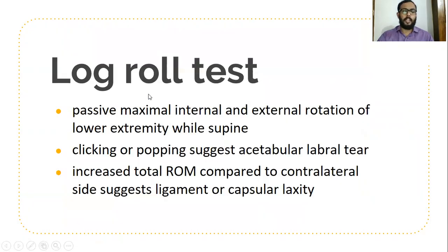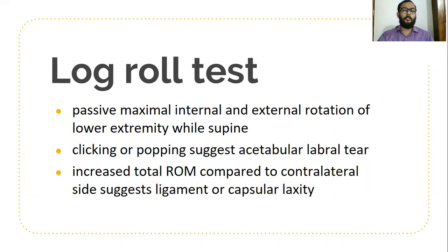Coming to the log roll test, in which the patient is in supine position and passive internal and external rotation of the lower extremity is done with the knee in completely extended position. Whenever there is clicking or popping sound, it is suggestive of acetabular labral tear. Increased ROM compared to the contralateral side is suggestive of ligament or capsular laxity. We check the normal side first by feeling the greater trochanter, then check the affected side for increased range of motion.